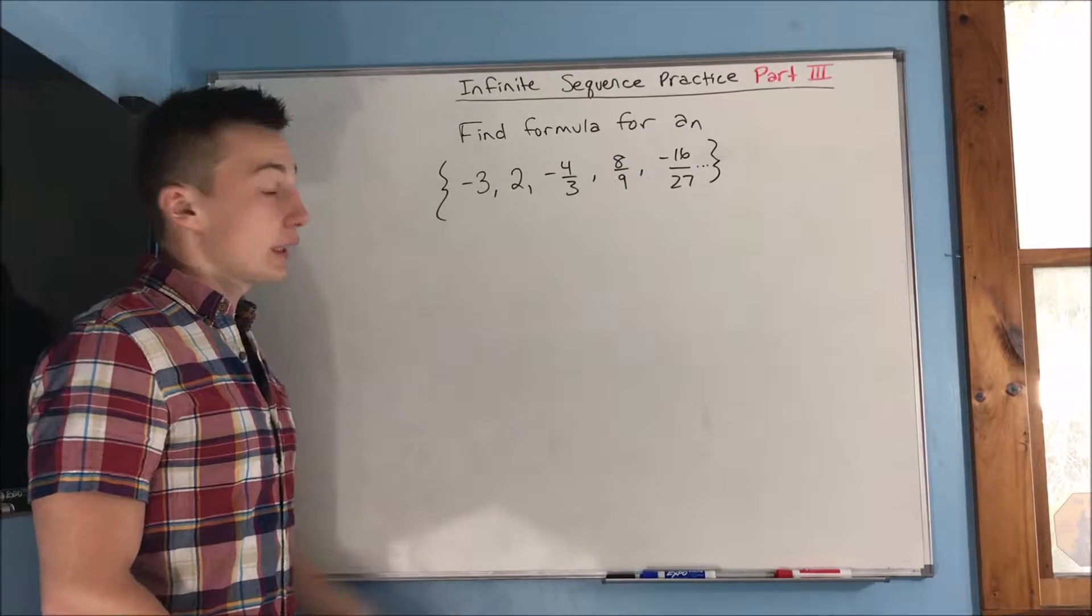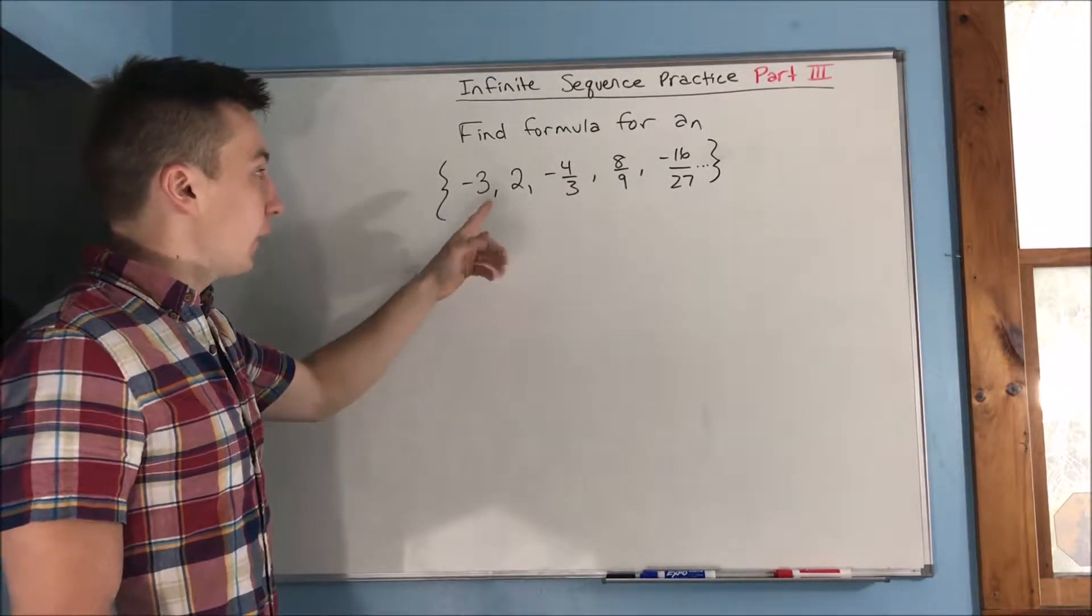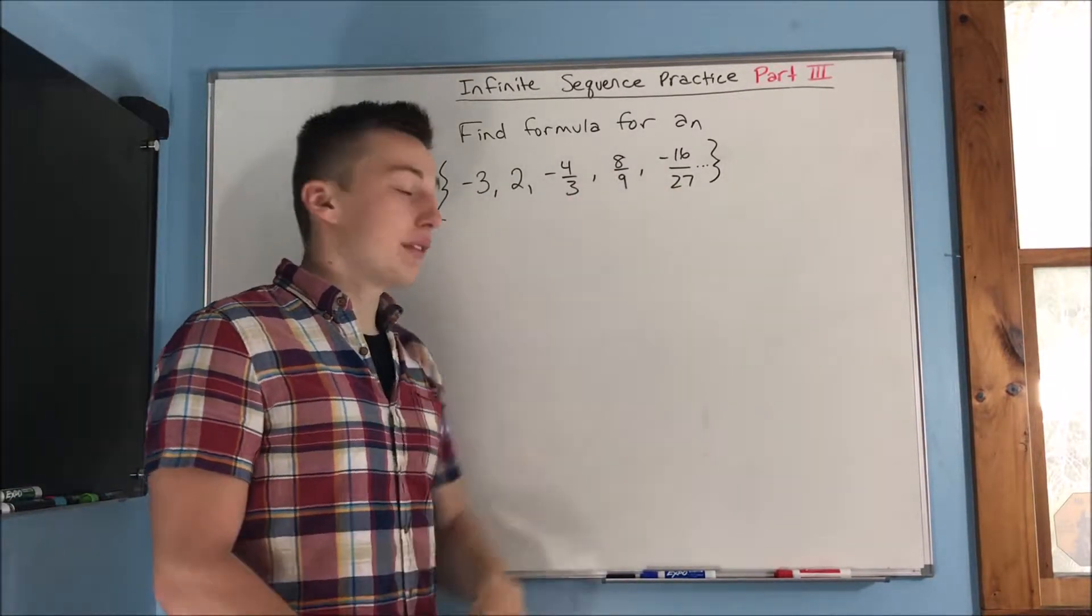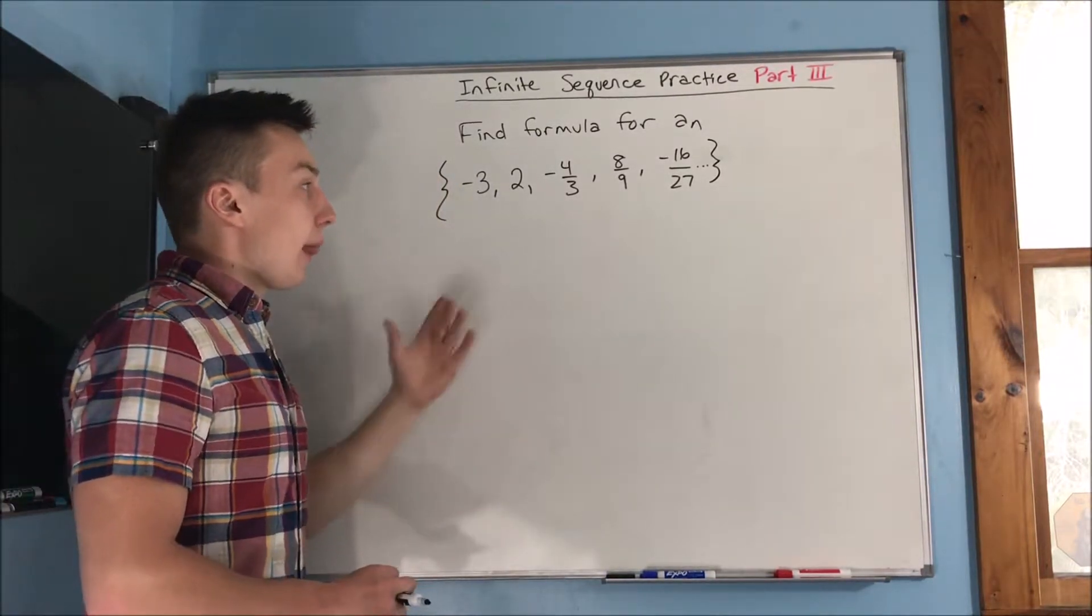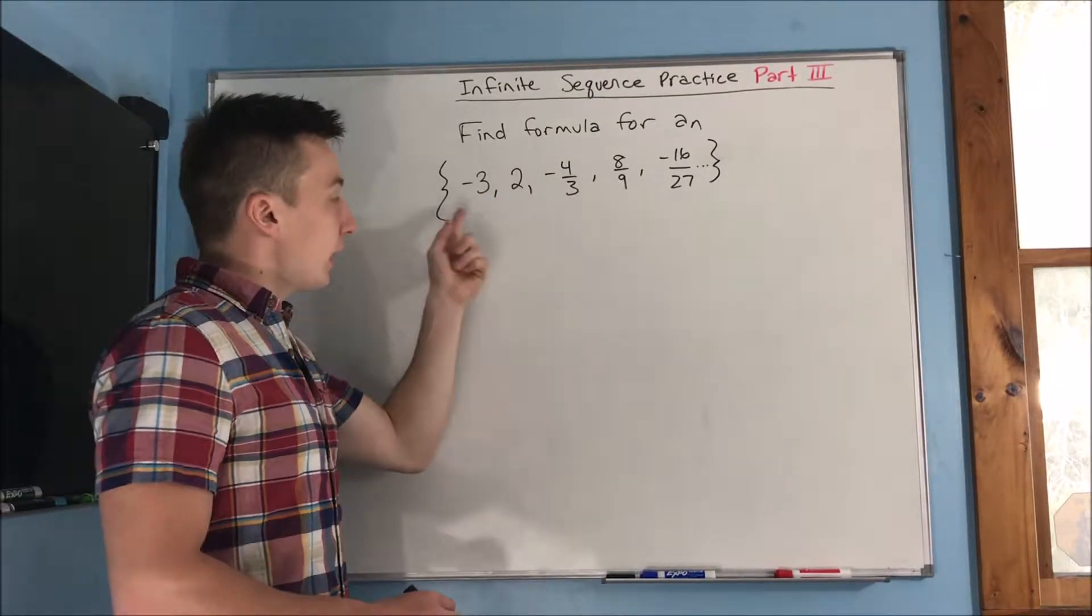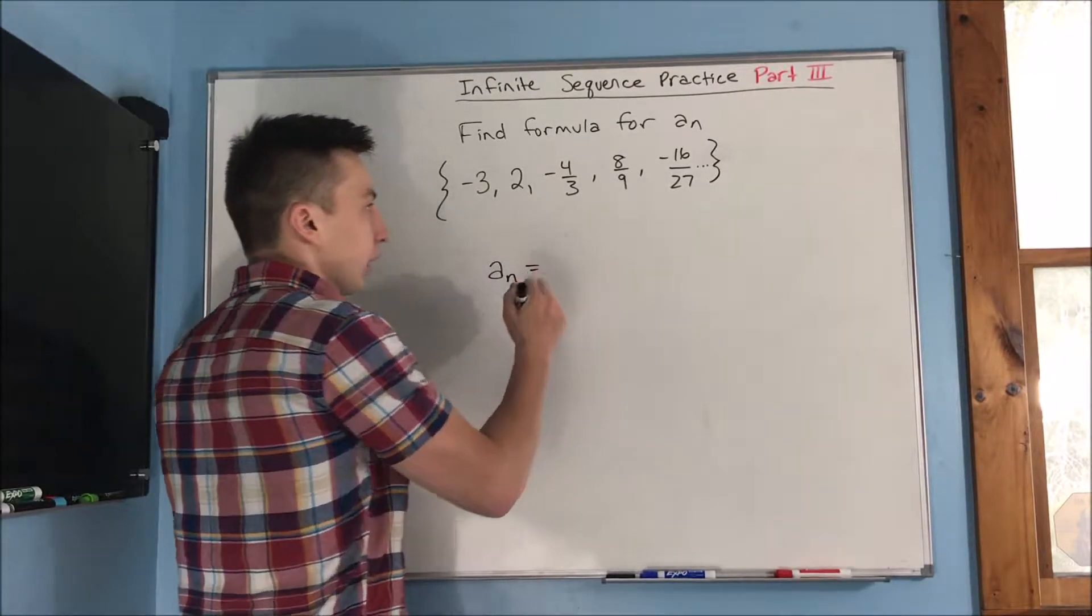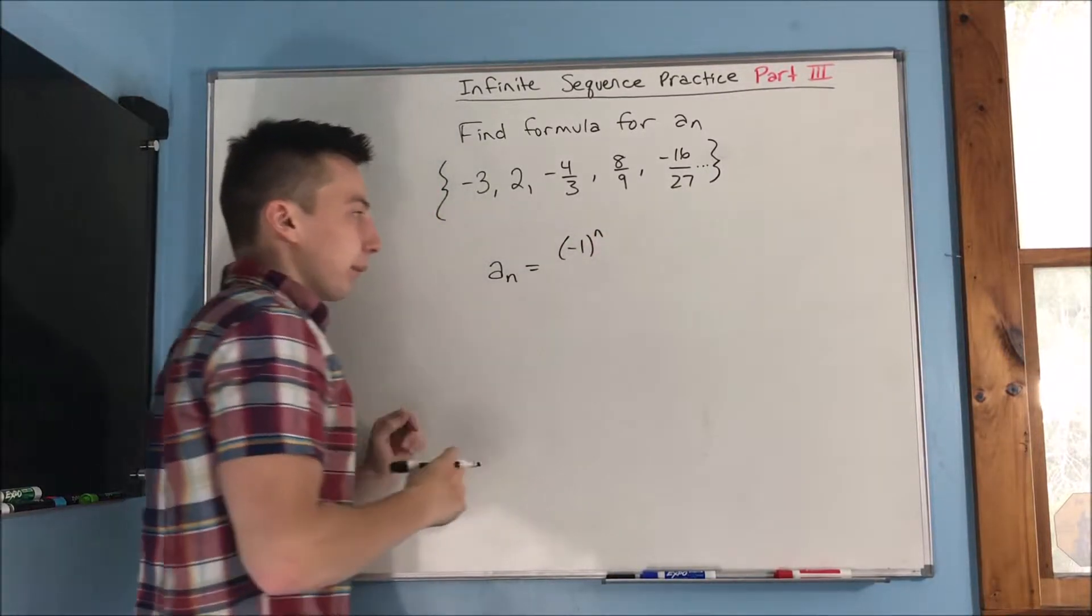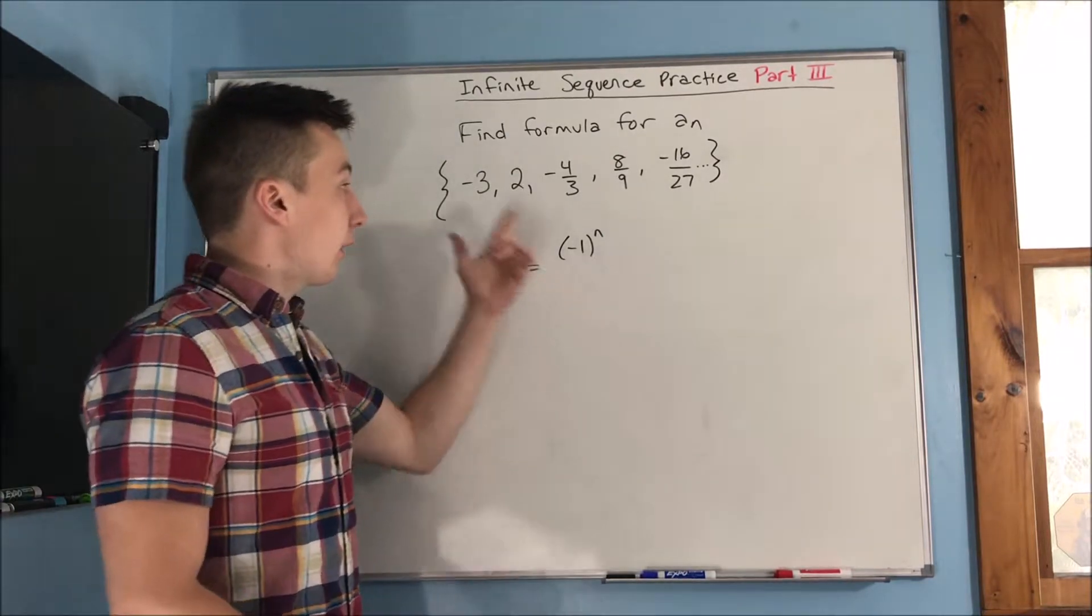So we have our next problem up on the board here. We need to find the formula for a sub n of our infinite sequence here that starts off negative three, two, negative four thirds, eight ninths, negative sixteen twenty-sevenths, and so on. So first, let's take care of that negative. We see we have a negative in every other term. Again, this being in the odd terms. So what we can do is say that a sub n equals, we'll have a negative one to the n. We don't need to subtract one or add one or anything like that here because these are in the odd terms.